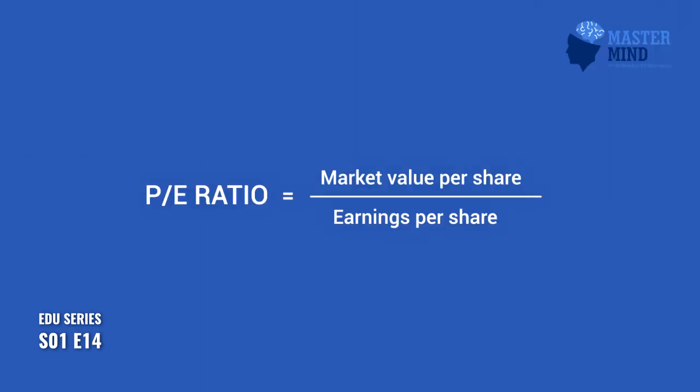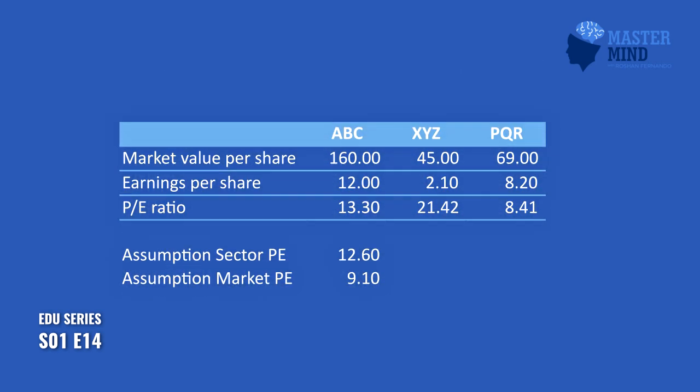So how to calculate the PE ratio? Market value per share should be divided by earnings per share. In this case, ABC will trade in the market and the earnings per share is $12. The assumption considers both the sector PE and market PE, as in the case of XYZ Ltd.